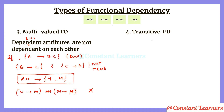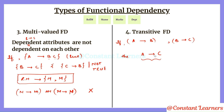The last type is transitive functional dependency, which is the same as the transitive property. If A determines B and B determines C, then A will determine C. This is the transitive property, and this kind of functional dependency is known as transitive functional dependency. That was all for properties and types of functional dependency. If you like the video please give it a thumbs up, write any doubts in the comment section, and thank you for watching.